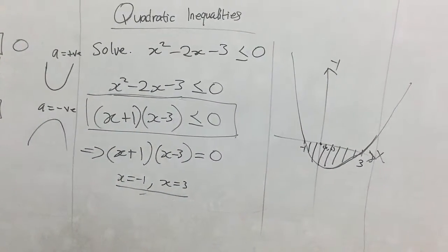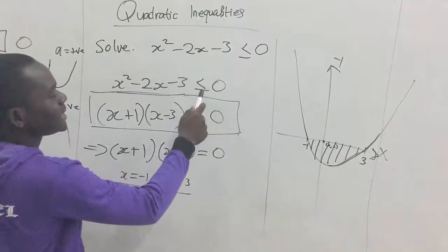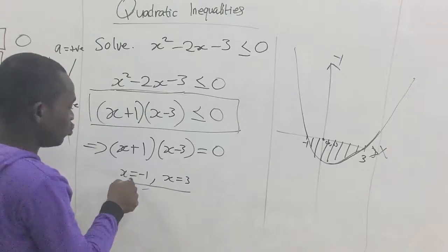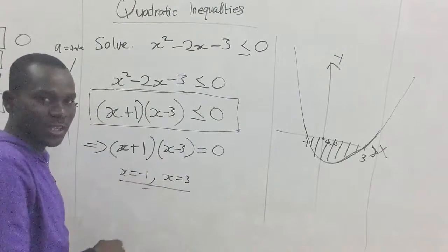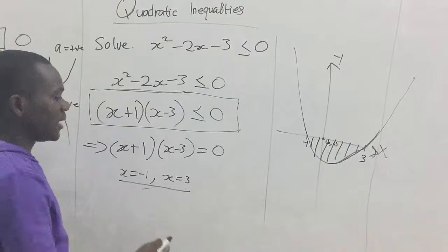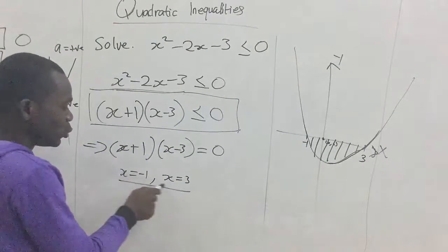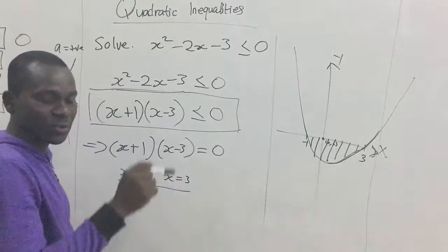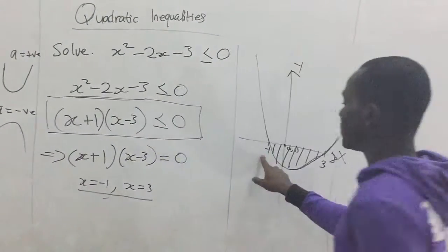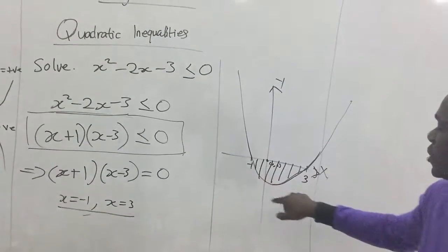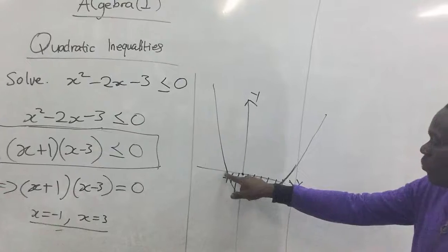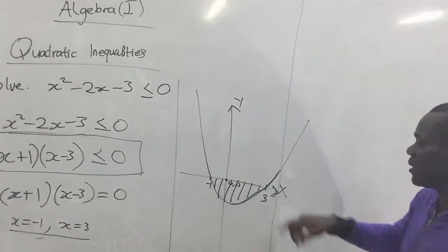Now, once also, we should notice that when we have an inequality sign with the bar under it, it tells that the roots we find here are part of the solutions. But, when there is no bar under the inequality sign, it means the root we find here itself does not satisfy the equation. So, since we have the bar here, it means negative one is part of the solution. Three is also part of the solution.